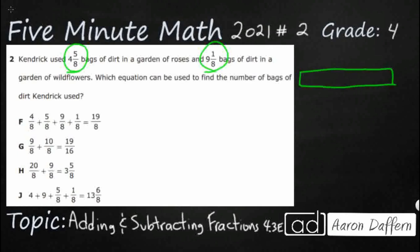So really it looks like we've got a part-part-whole. It looks like we're missing our whole, but we do know we've got two different parts here. So we've got this four and five-eighths, and then we've got this nine and one-eighths. They're both bags of dirt. One's in a garden of roses, one's in the garden of wildflowers, but it doesn't really matter. We just want to know the number of bags of dirt that he used. So really you see here we've got an addition relationship that we are going to use.